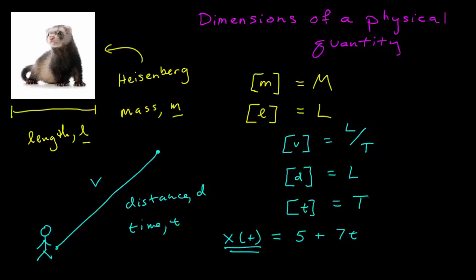So I would represent that notation with brackets again. The brackets of x of t is also a length, while the dimension of time itself is time. And so that's how we define dimensions and represent them using the bracket notation.